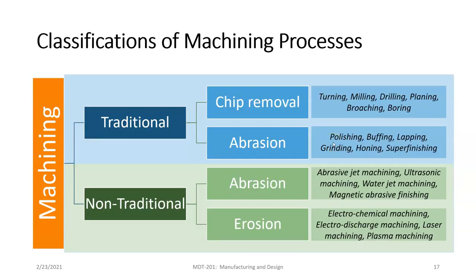Looking more in depth at the machining process, we can break it down into two categories: traditional machining and non-traditional machining. Traditional machining can be further broken down into chip removal processes — which include turning, milling, drilling, planing, broaching, and boring — and abrasion processes, which include polishing, buffing, lapping, grinding, honing, and super finishing. In the non-traditional category we have abrasion and erosion — methods such as water jet, ultrasonic machining, and magnetic abrasive finishing.